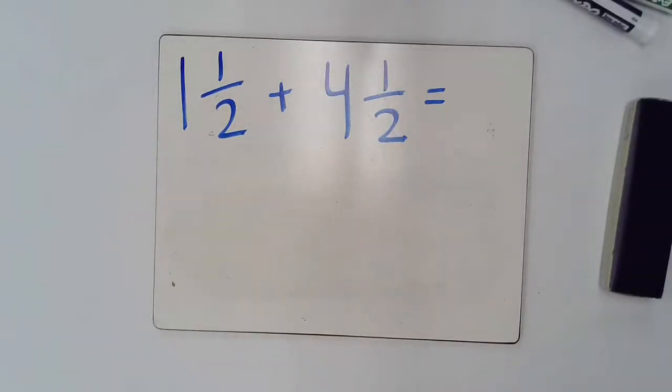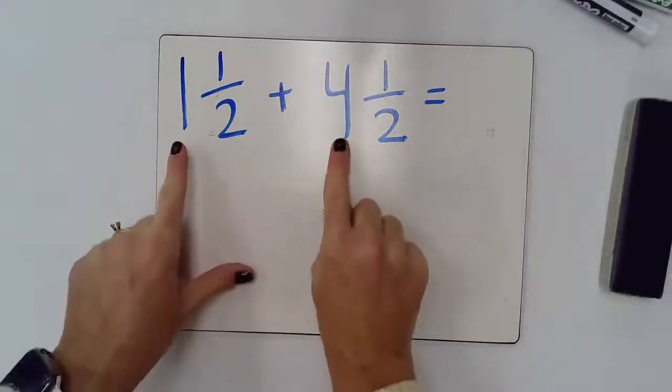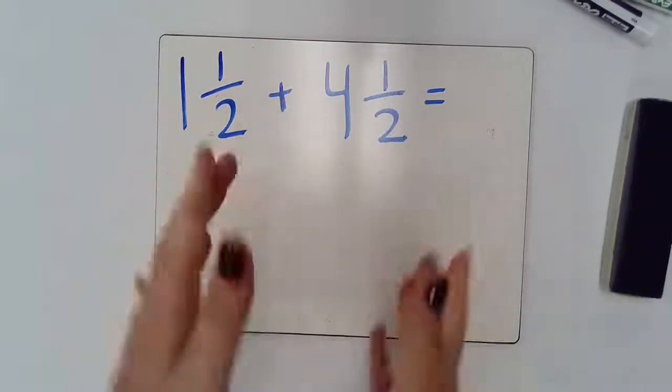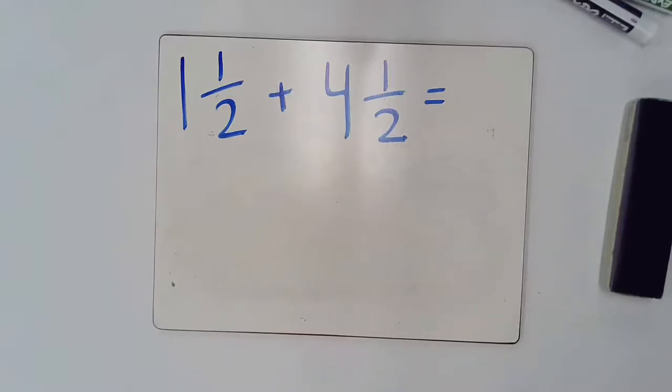We're going to learn two ways to add and subtract these mixed numbers. We're going to be writing these mixed numbers as improper fractions and apply what we know about addition and subtraction of fractions. And then, we're also going to be subtracting simply just the whole numbers and then the fractions. Let's go ahead and get started.